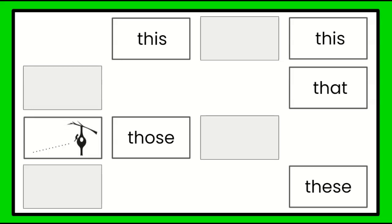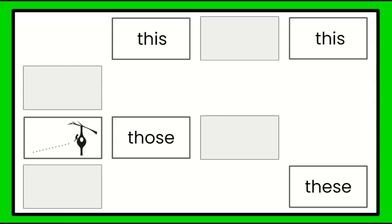Next up is our bird feeder, and that dotted line shows it's far away. And is there more than one bird feeder? No, there's just one. So that means we're either going to use this or that, and it's far away — so we're going to say that bird feeder.